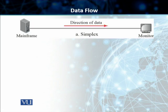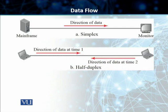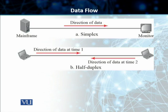In half-duplex mode, each of the two machines can transmit and receive, but not at the same time — they take turns. The full bandwidth can be used by each machine, but only one at a time: machine one transmits at time one and stops, then machine two transmits at time two and stops. Walkie-talkies are a good example — you transmit your message, say 'over,' and then allow the other party to communicate.